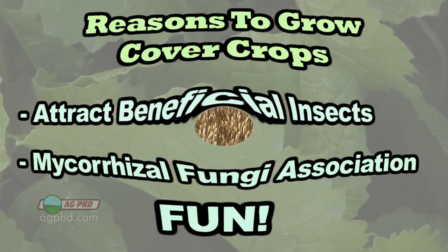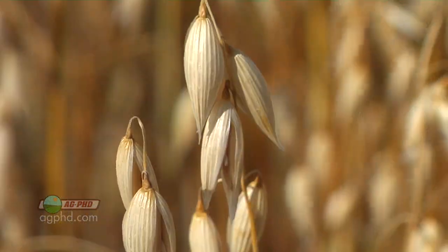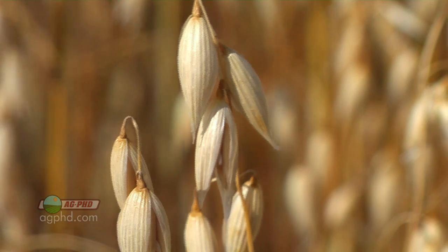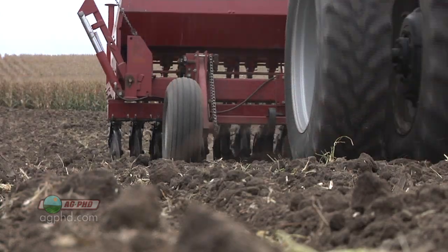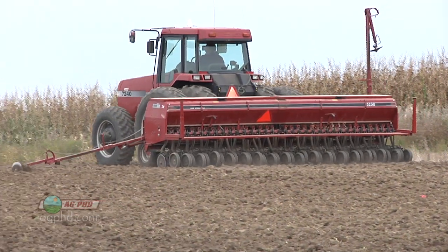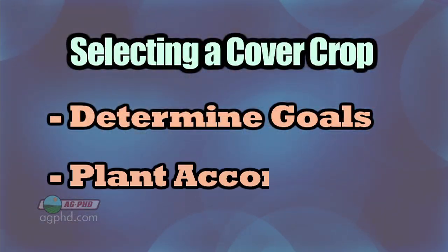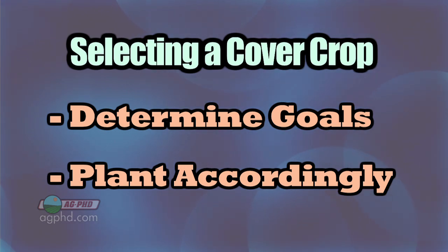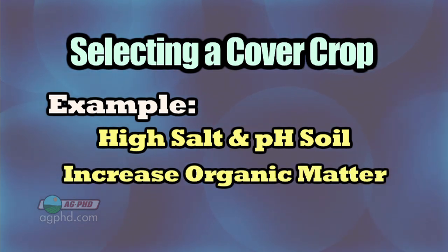With all those different benefits, you certainly aren't going to get everything out of just one plant. Most farmers planting cover crops are putting together two, three, or four different seeds. I always tell farmers to identify their number one goal and find the crop that best fills that goal. For example, if you have super high salt, high pH soil and just want to get something growing, you might pick barley for its good tolerance.